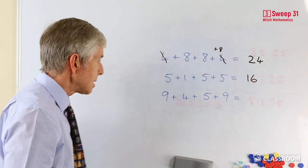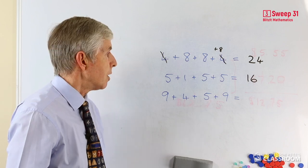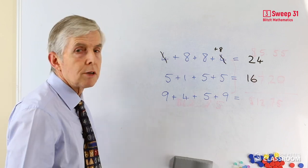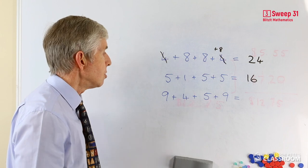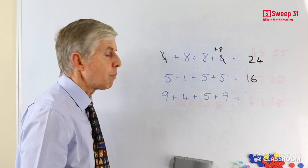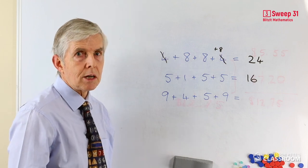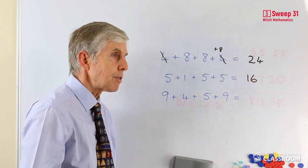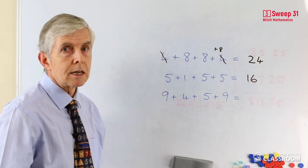And then for the last example, 9 plus 4 plus 5 plus 9. This is a good example of one that would be difficult to do if we simply started at the beginning. 9 plus 4, a little bit tricky. 13 plus 5, that's tricky also, that's 18 plus another 9—that's a third tricky example.